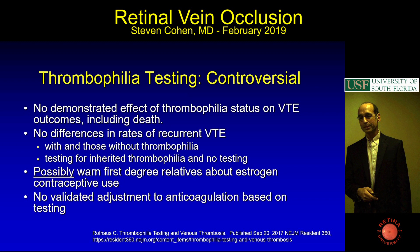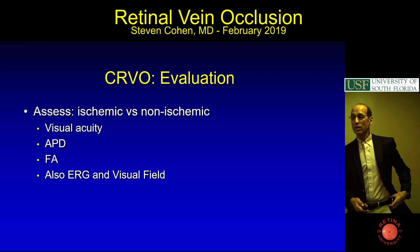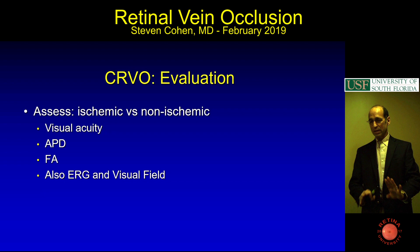When doing a CRVO evaluation, you want to look at visual acuity, APD, fluorescein, ERG, and visual field. APD is a big one—it was used as an inclusion criterion in some central vein occlusion studies rather than measuring areas of ischemia. A brisk APD is important to identify.